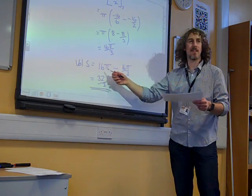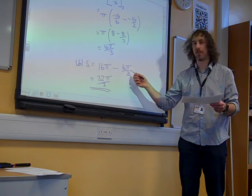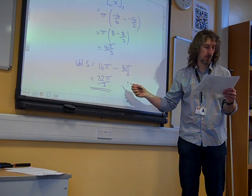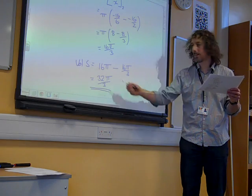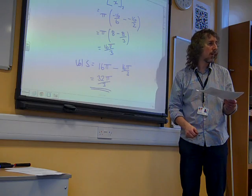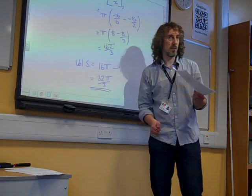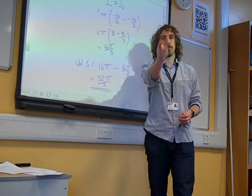And they actually accepted that as the final answer. They were happy with 16 pi minus 16 pi over 3, even if you didn't get... well, no, actually, sorry, reading this, it's 32 pi over 3. So, you didn't have to do that quite well. Or exact equivalent, so if you wrote 10 and 2 thirds, it's fine. Right. And that's maths.